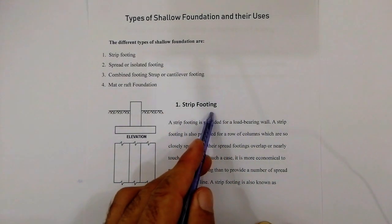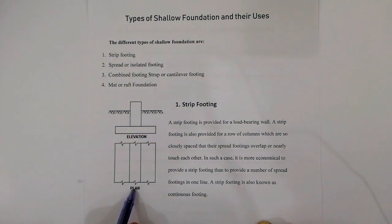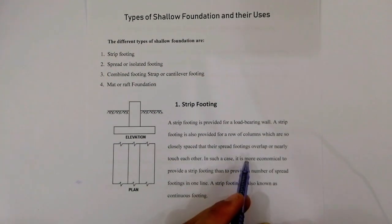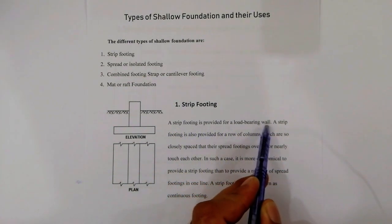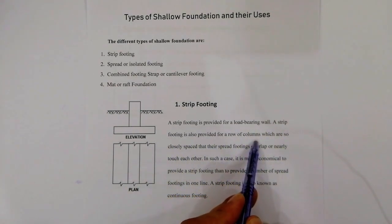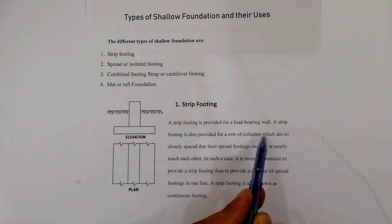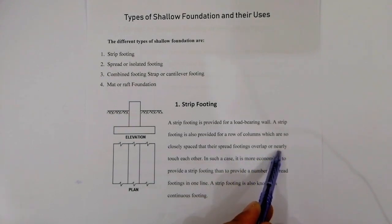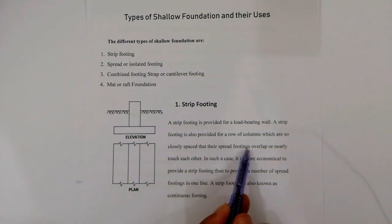The first type is strip footing. You can see here the diagram of strip footing — this is the plan and this is the elevation. A strip footing is provided for load-bearing walls. It is also provided for a row of columns that are so closely spaced that their spread footings overlap or nearly touch each other.